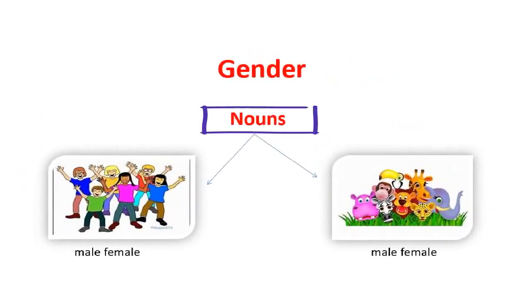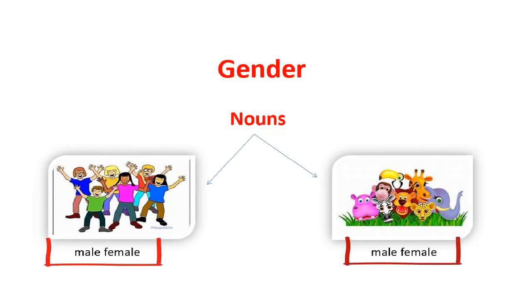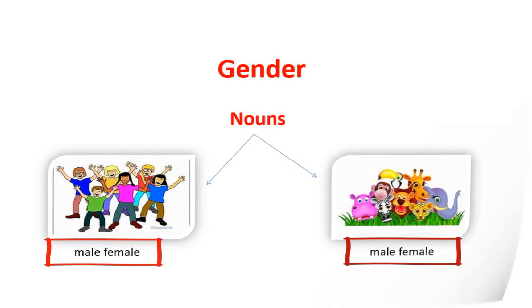Today we are going to learn about genders. Have you ever heard the word gender? So don't worry — I'm going to explain it and you can easily understand what gender is. Gender is a category of a noun. Every noun indicates whether the person or animal we are talking about is male or female.